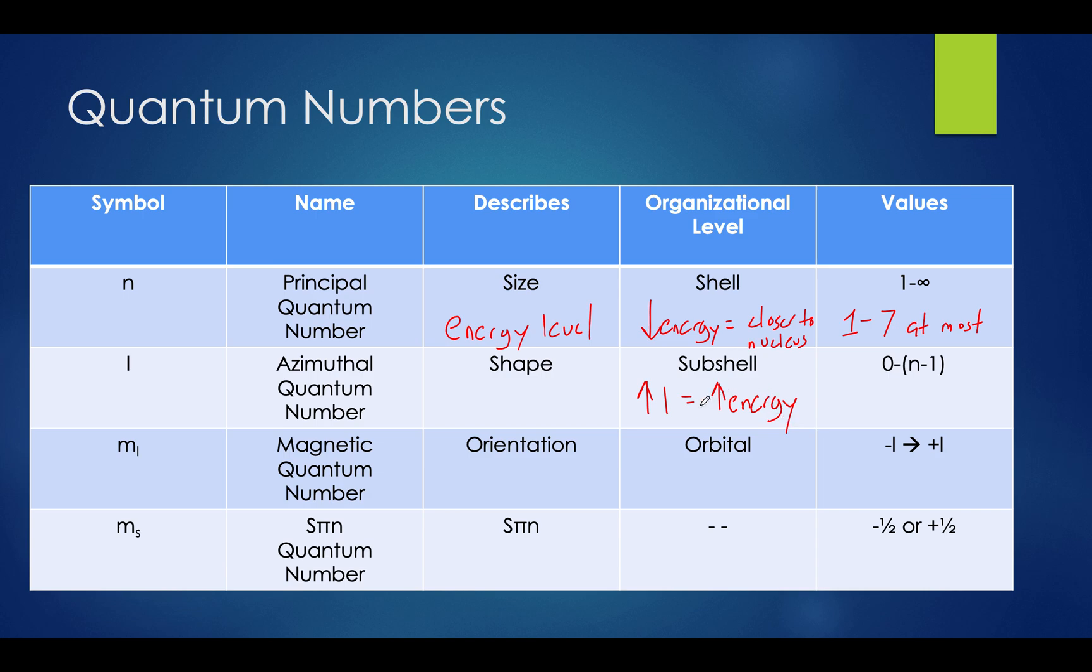Now within each of these subshells, we have orbitals that are described by the magnetic quantum number, or M sub L. This number ranges from negative L to the positive value of L. Each orbital has a specific shape, which signifies the area that an electron can be found in the atom. An S orbital is spherical, while P orbitals have two lobes connected to them by a node. There are three of them called PX, PY, and PZ.